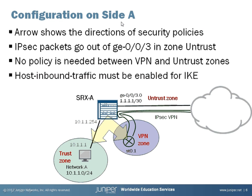The configuration on Site A is shown here. We configure a tunnel interface, st0.1 in our case, and put it into a VPN zone. It is not required to create a separate zone for tunnel interfaces, but it is convenient. Because traffic goes from the trust zone to VPN, the security policy must be configured between the trust zone and VPN zone. The actual IPsec packets go out of the GE003 interface in the untrust zone, but no policy is needed between VPN and untrust zones. However, host-inbound traffic must be enabled on the untrust zone for IKE.